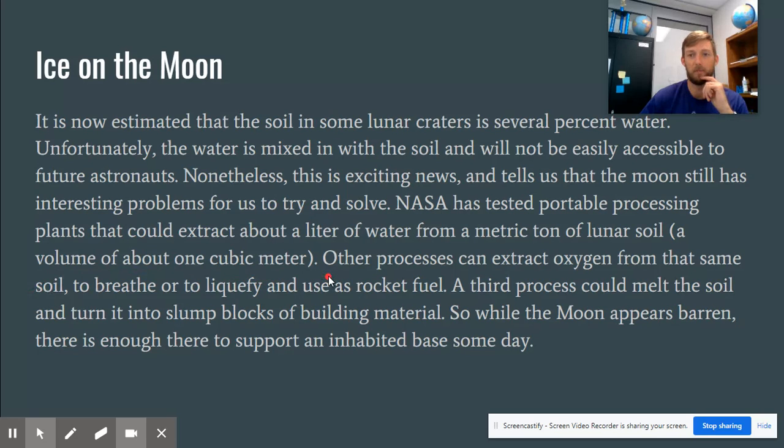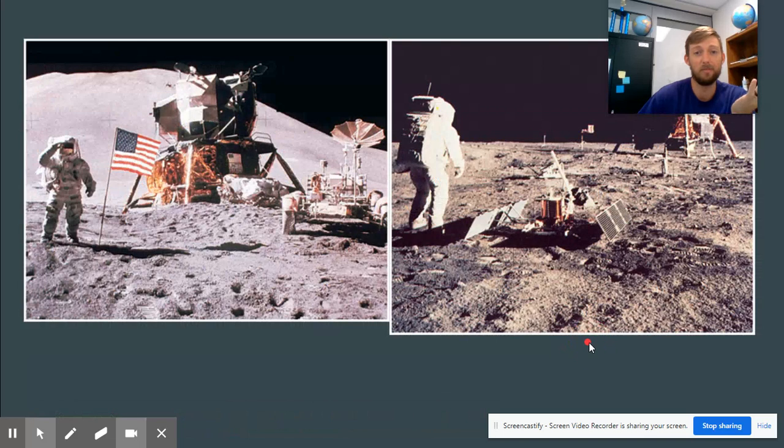So they've been able to figure out that they can take about a liter of water from a metric ton of lunar soil. So that's volume is about one cubic meter. So a meter, a meter stick, cubically, all three directions. So that's a lot of material to get just a liter of water. But they can extract oxygen from it, which can be used to breathe, and they can use it for fuel. They can extract hydrogen, which can be used for rocket fuel. And then they can melt the soil and use it into slump blocks, which is basically like big rock blocks, and use it for building materials. So kind of like we have the concrete cement blocks, they would use melted moon rocks to build with, which is pretty cool.